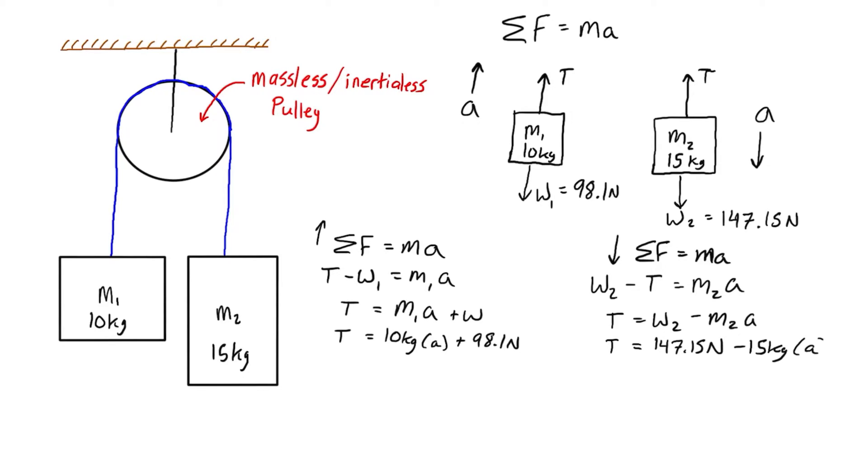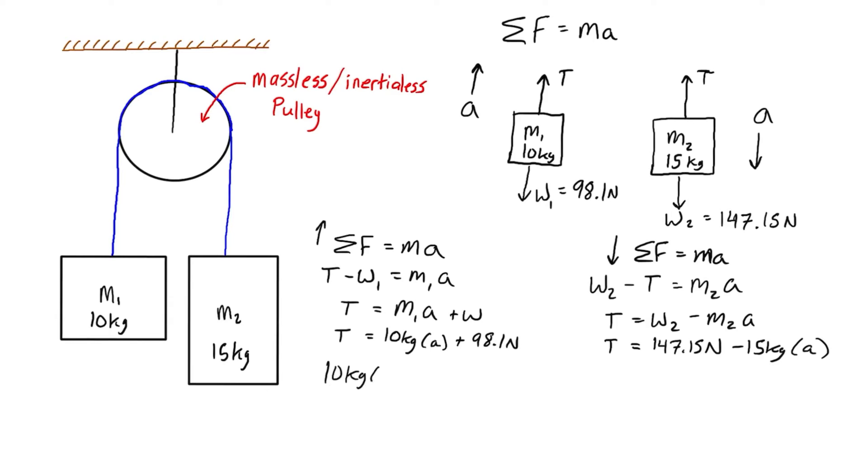We have two different expressions for T, so we can set them equal to each other. When we group the like terms, we get 25 kilograms times a equals 49.05 newtons.